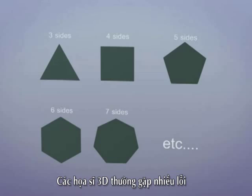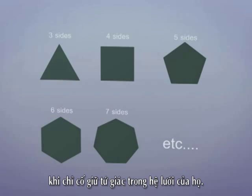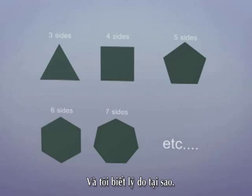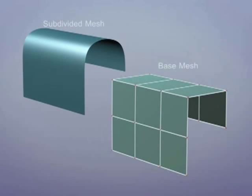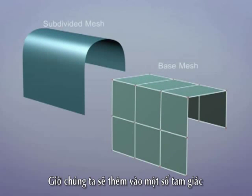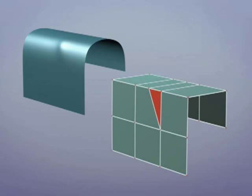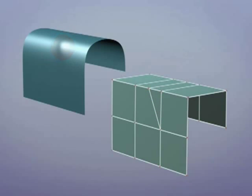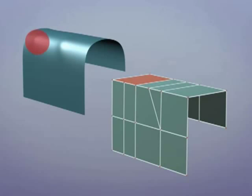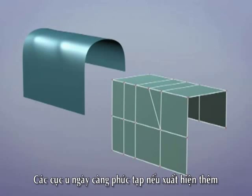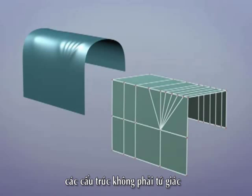3D artists frequently state that it's important to keep meshes exclusively made up of four-sided faces, and not without reason. Here we see that the addition of a three-sided face produces a small lump, as does the addition of a five-sided face. The effect is compounded if many non-quads are present.